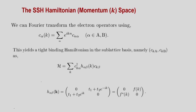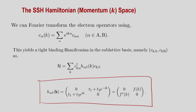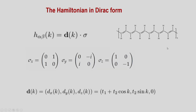To give the preliminaries: the SSH Hamiltonian in momentum space has an off-diagonal form, where f(k) equals t1 plus t2 times e to the power minus ik, where k varies from minus pi to plus pi — the Brillouin zone for a one-dimensional system. This allows us to write the Hamiltonian in the form of a massless Dirac Hamiltonian, d dot sigma. A possible physical realization is the polyacetylene chain, which consists of alternating single and double bonds of carbon atoms.